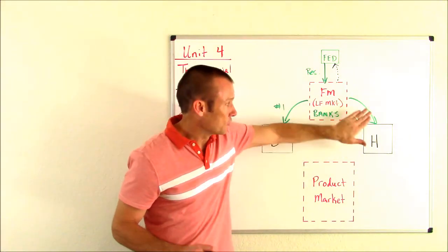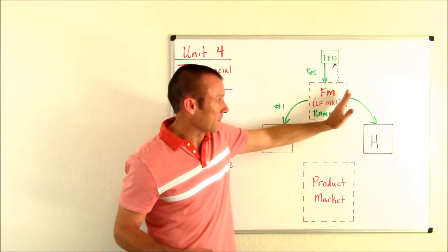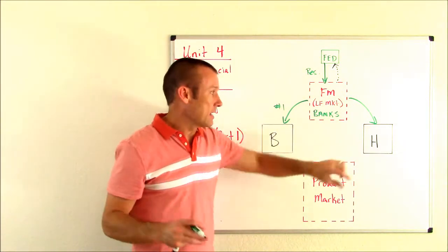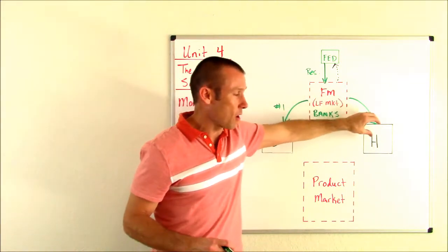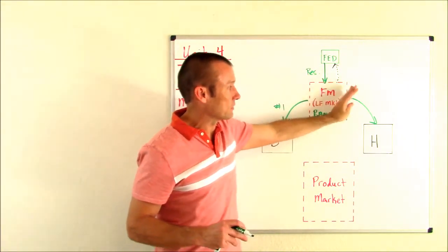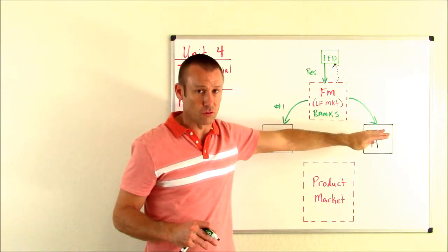So we're trying to get money to flow both into households and into businesses. Again, one more time, don't get confused here. I've got money going from the financial market to the households. I generally don't do that because on net households save more than they borrow. I'm just simply illustrating this Fed action is going to get more money flowing this direction.